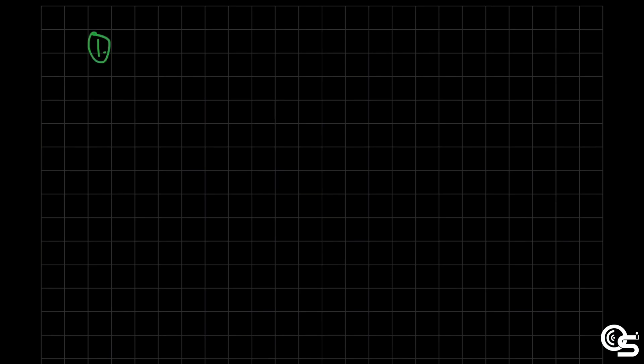For instance, we have the given of vertex at the origin, or (0, 0), and focus at (0, negative 3). Let us now discuss the solution.